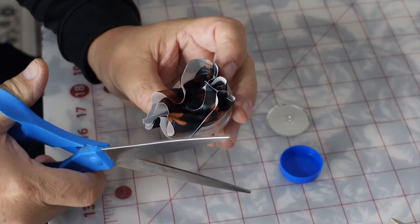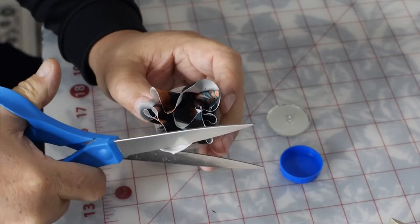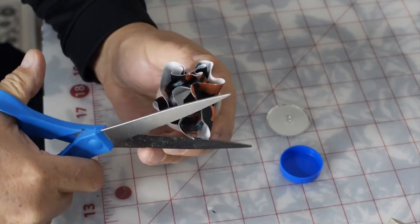Once you push down nice and tight, you're going to cut and trim any excess fabric that's sticking out. You're going to want an overhang approximately less than a quarter of an inch.